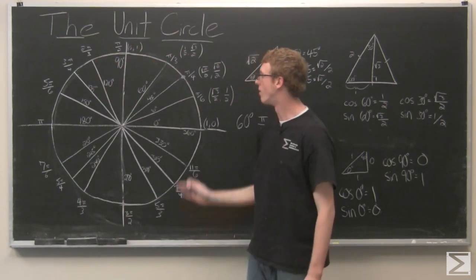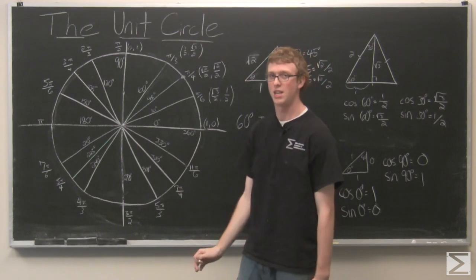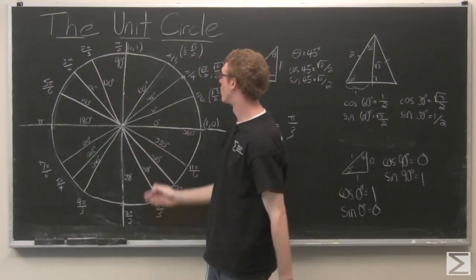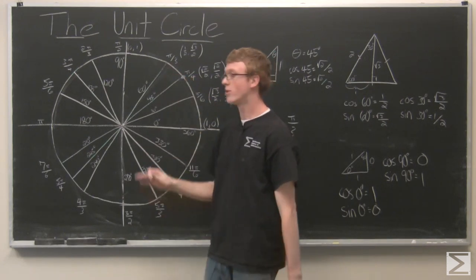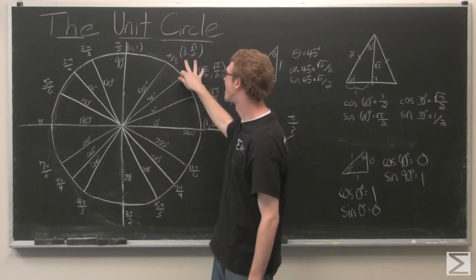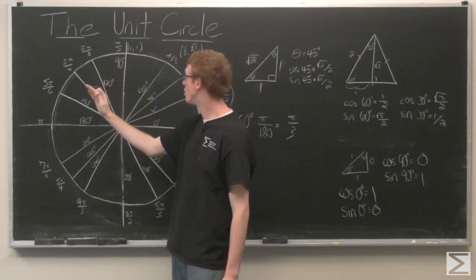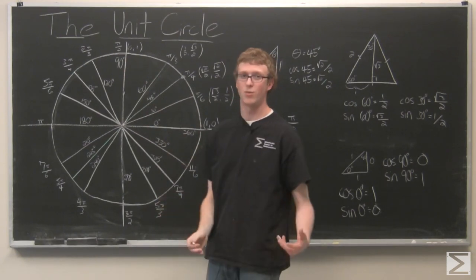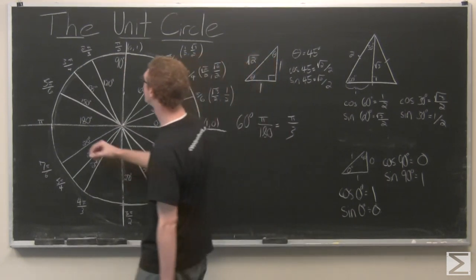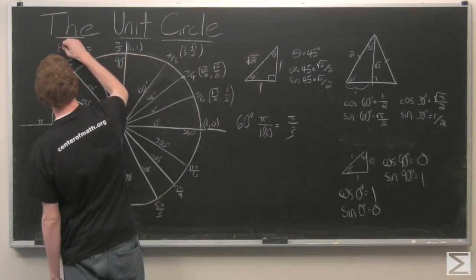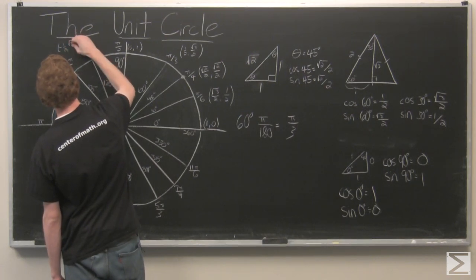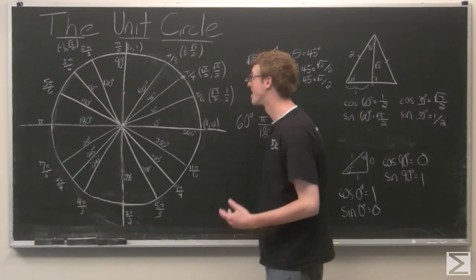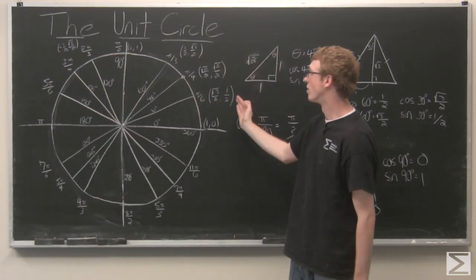Now every point around the circle is going to be same as the corresponding point up to sign. So, for example, 2 pi over 3 is going to have the same value, the same point as pi over 3 up to sign. Because we're now working in quadrant 2 where x takes on a negative value. So that point over there is going to be negative 1 half comma rad 3 over 2.